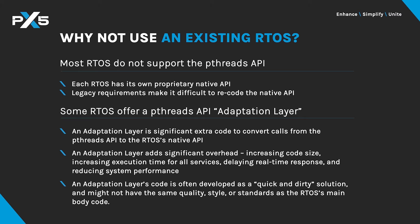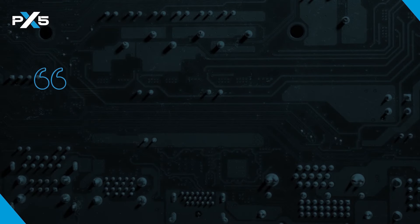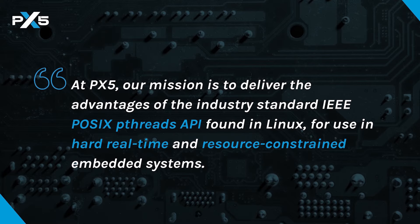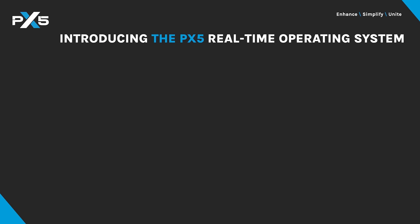So what's the answer? How can developers use the familiar POSIX standard PThreads API and still get hard real-time performance and small code size in a simple, easy-to-use RTOS? Here's our answer. At PX5, our mission is to deliver the advantages of the industry-standard IEEE POSIX PThreads API, found in Linux, for use in hard, real-time, and resource-constrained embedded systems. That's what the PX5 RTOS is all about.